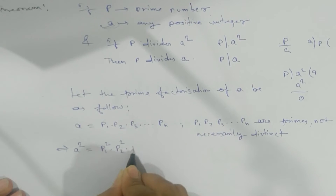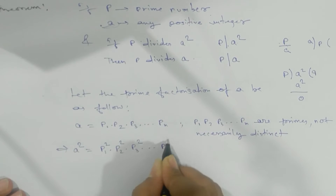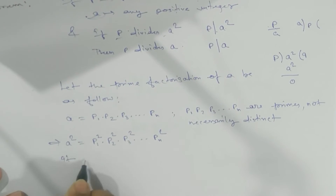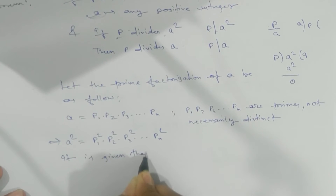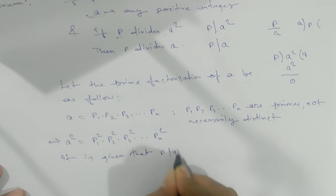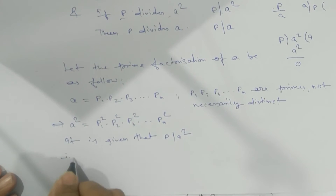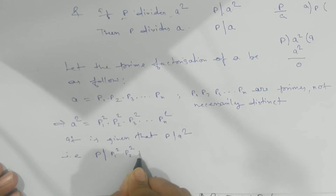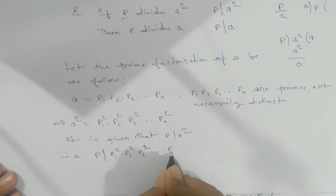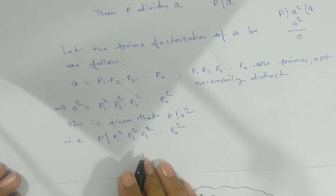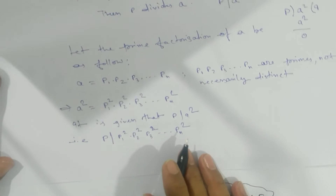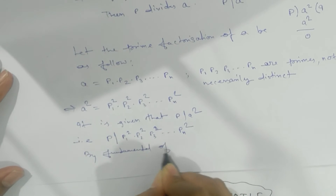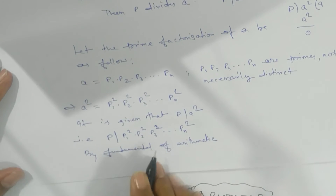Squaring both sides: a² = p1² × p2² × p3² × ... × pn². It is given that P divides a², which means P divides p1² × p2² × p3² × ... × pn².